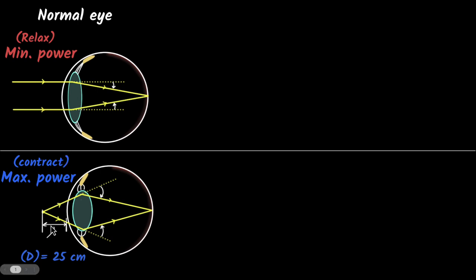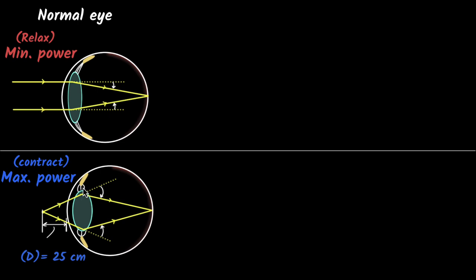On the other hand, when you're looking at things that are very close to you, your ciliary muscles contract and push on the lens, increasing the power. When the object is at the near point — roughly around 25 centimeters — your eyes will be using the maximum power. This is when you're looking at things close by: your eyes are at maximum power and the ciliary muscles are contracted.